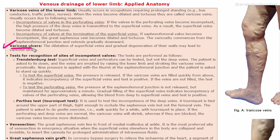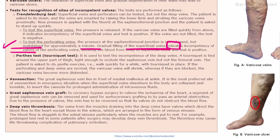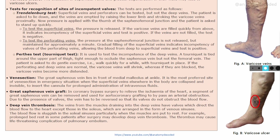If varicose veins are persistent, they may lead to a condition called varicose ulcer. Gradual degeneration of the valves may lead to varicose ulcer, which can be seen in this clinical image — the degenerated valve of the vein opens on the surface.